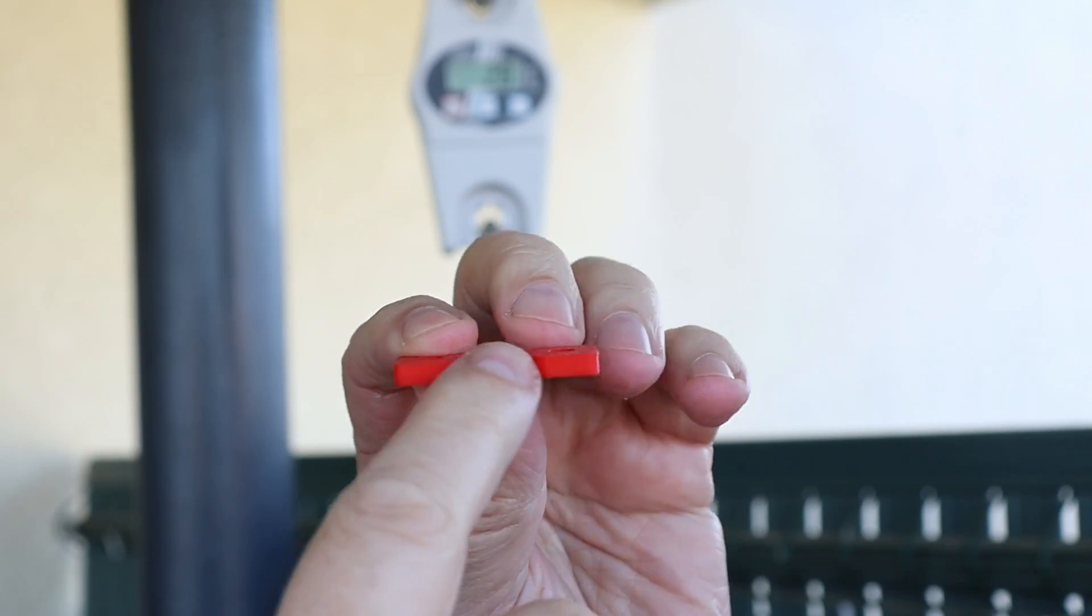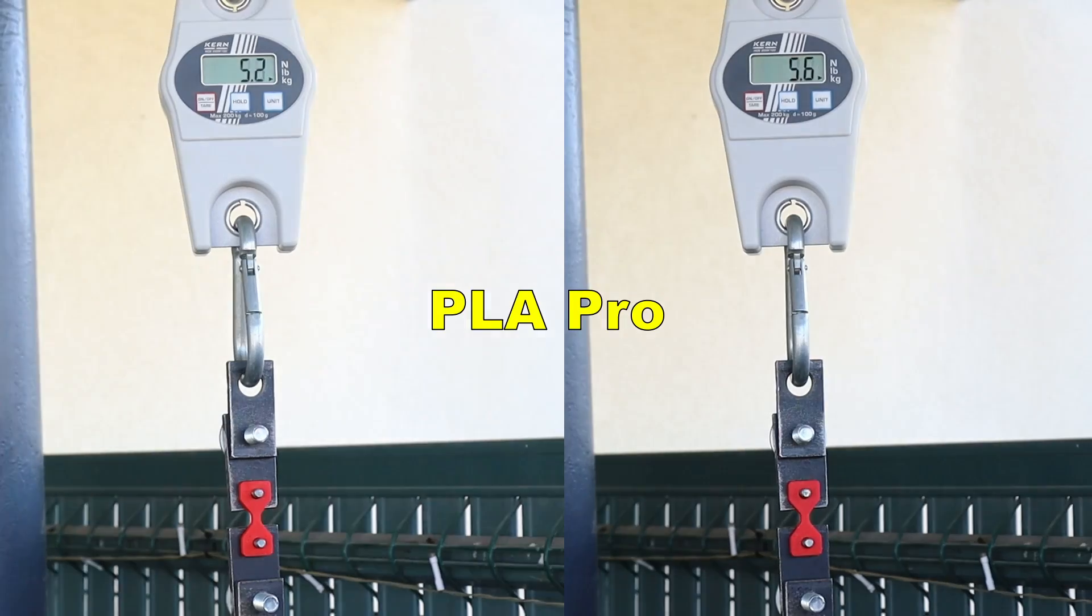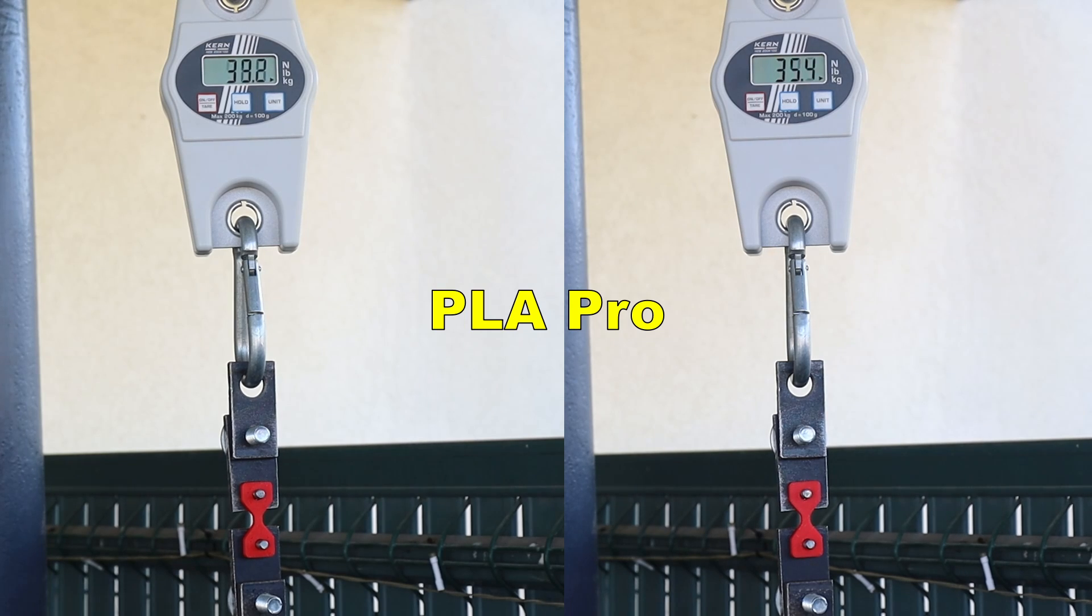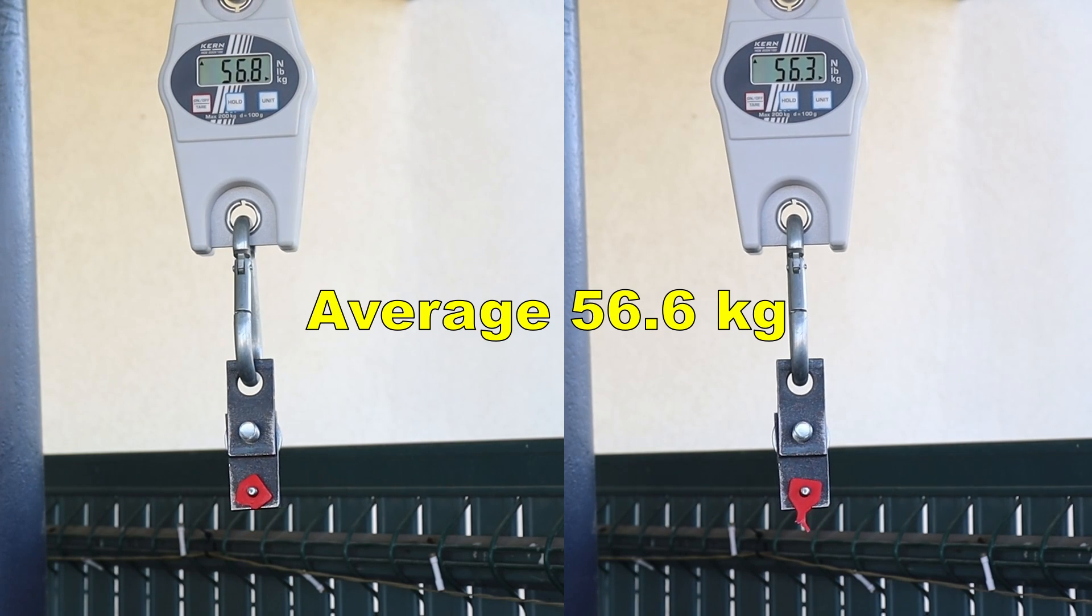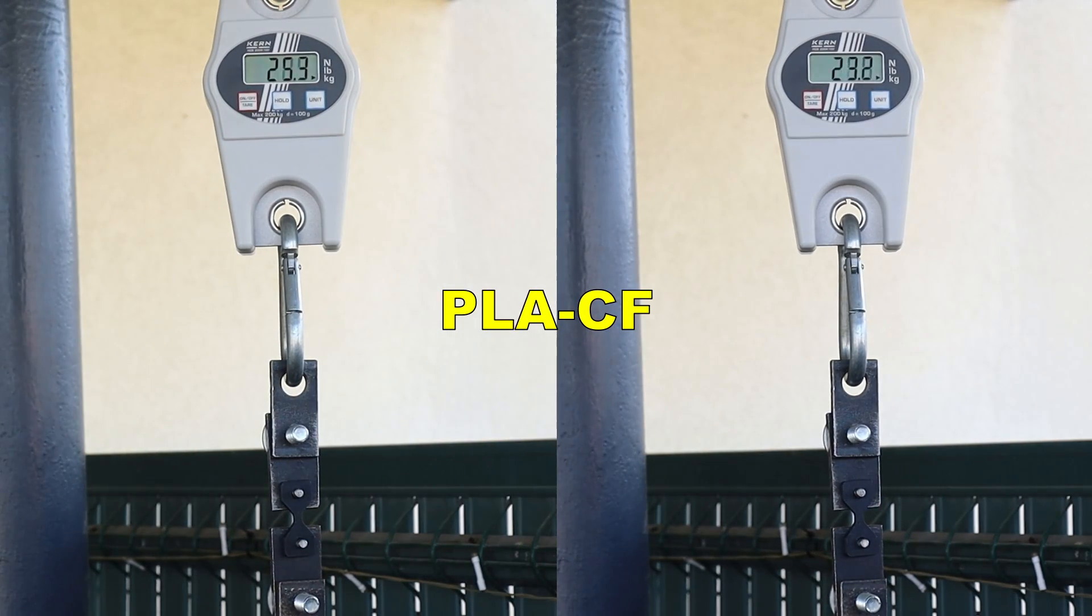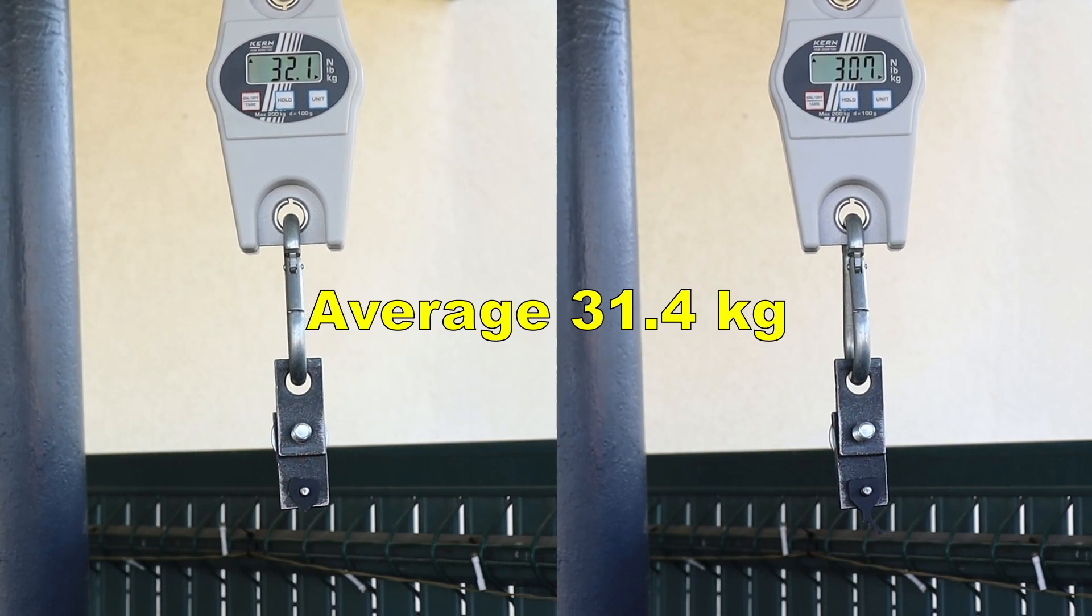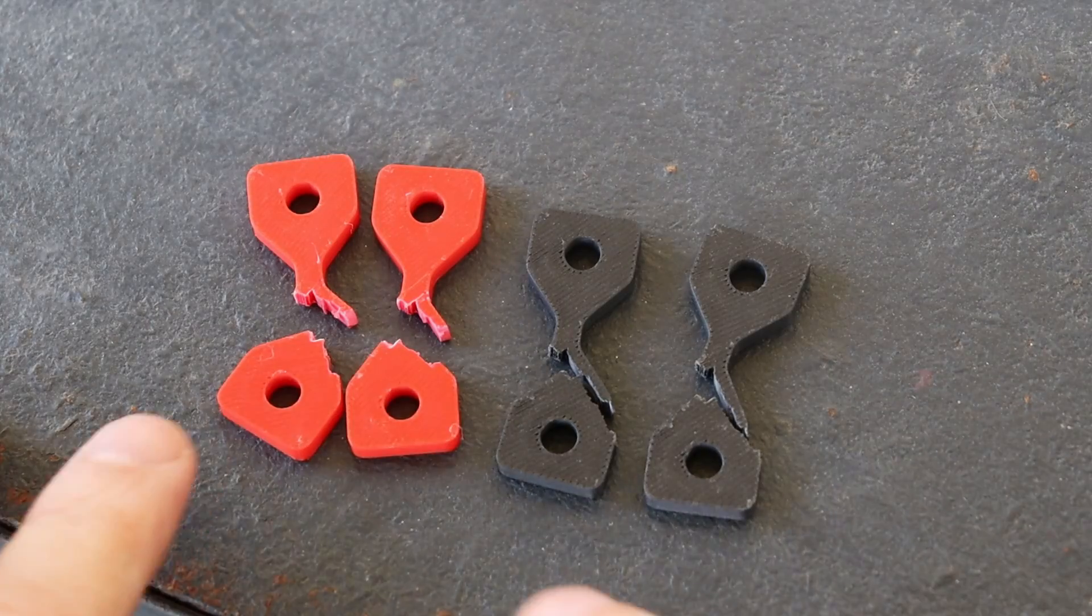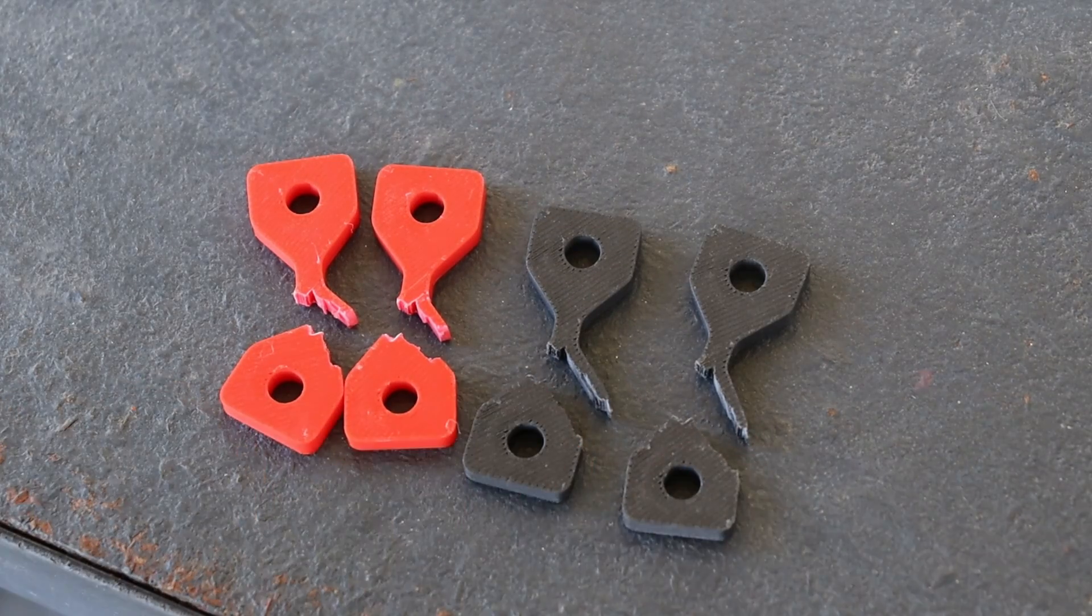The tensile pulling test with horizontally printed objects. And I'm starting with PLA Pro. Average 56.6 kg. And the carbon fiber version. Only 31.4 kg. Interesting, very similar break in both cases.